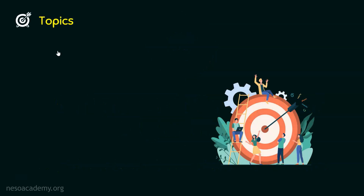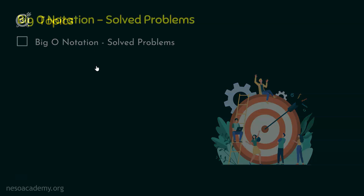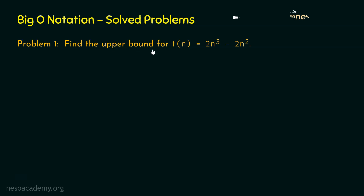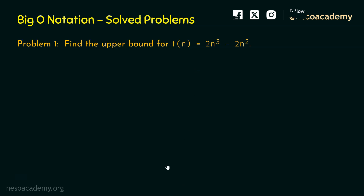In this lecture, we will solve 2 problems on Big O notation. Problem number 1 is: find the upper bound for f(n) equal to 2n³ minus 2n². I want you to pause this video for a while and try to solve this problem on your own. I hope you are done — let's solve this problem together.